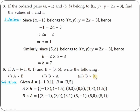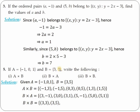For B cross B, both the first and second sets are B = {3, 5}. Forming all pairs: (3, 3), (3, 5), (5, 3), (5, 5). This gives you B cross B.